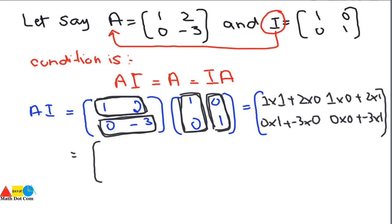Computing the results: 1×1 is 1 and 2×0 is 0, so 1+0 = 1. Then 1×0 is 0 and 2×1 is 2, so 0+2 = 2. Then 0×1 is 0 and −3×0 is 0, so 0+0 = 0. Then 0×0 is 0 and −3×1 is −3, so we get −3 here. The resulting matrix is 1 0 / 2 −3, which is the original matrix A.